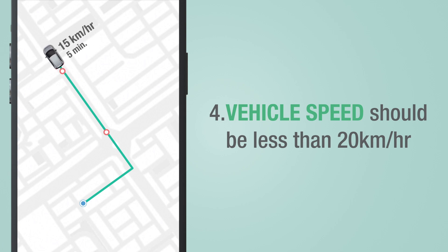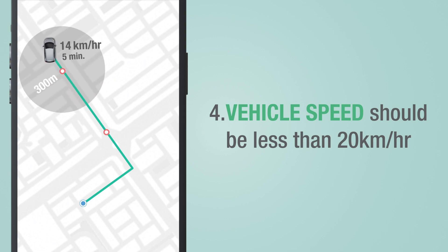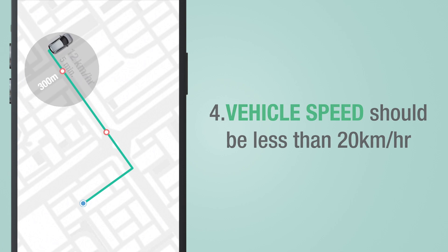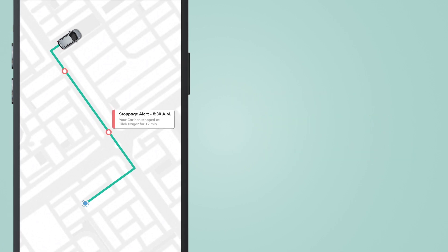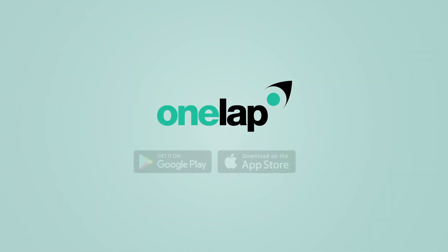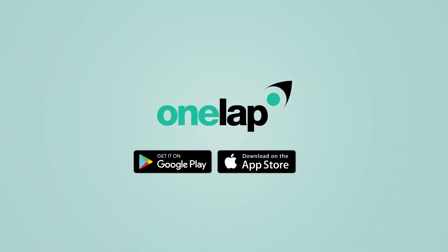If your vehicle is moving at less than 20 kilometers per hour for more than five minutes within a 300-meter radius, then the device will consider it as a stoppage. You can also view this stoppage info by simply clicking on it in the One Lap app.